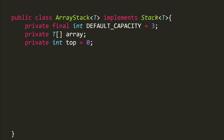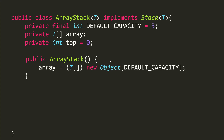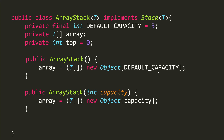The ArrayStack class implements those methods. From our example we initially created an array with size three, so that's the default capacity — you can increase it if you like. We create the array and set top to index zero. The constructor allocates three slots to the array. There's also a second constructor where you pass in a custom size, say 10, and it creates an array with 10 slots.